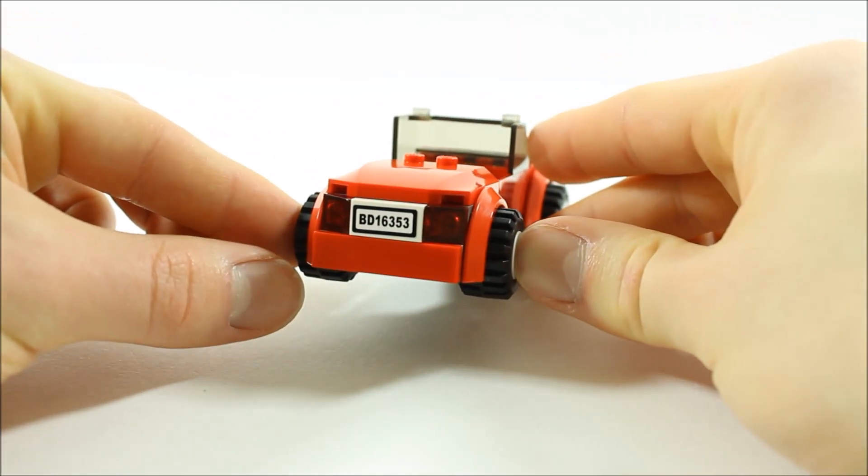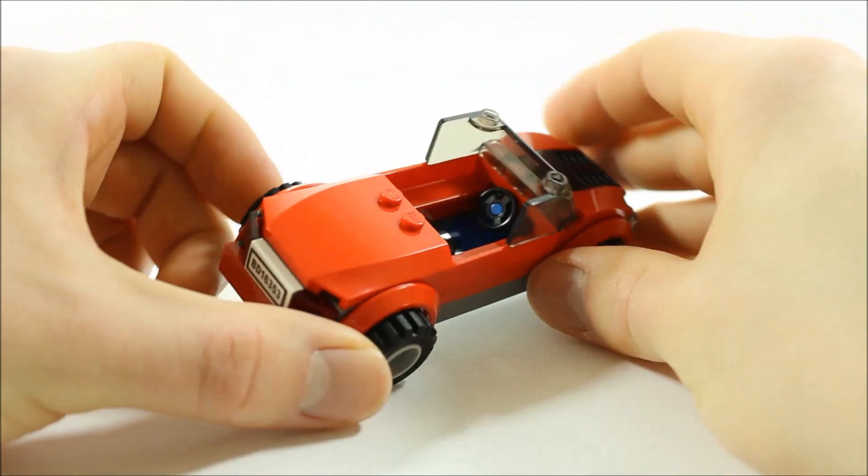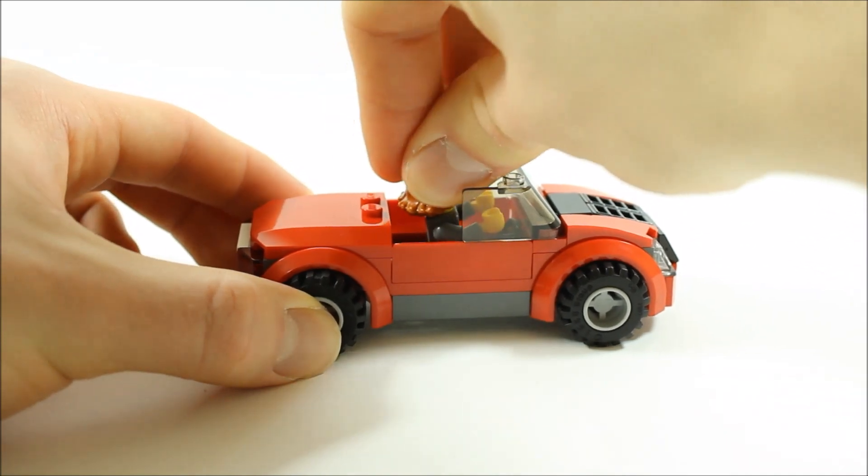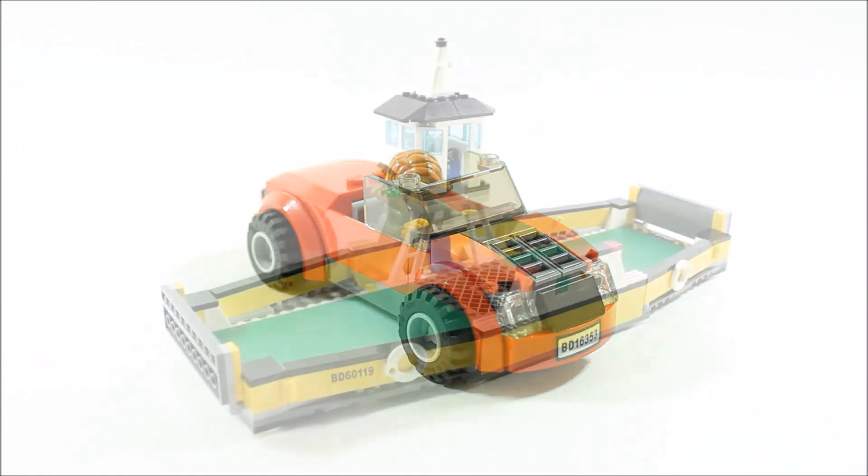At the back is another number plate sticker and red clear lights. You can simply clip in the business woman to the driver's seat where there's a blue steering wheel. Overall it looks good but it's just an added extra for the main ferry build.